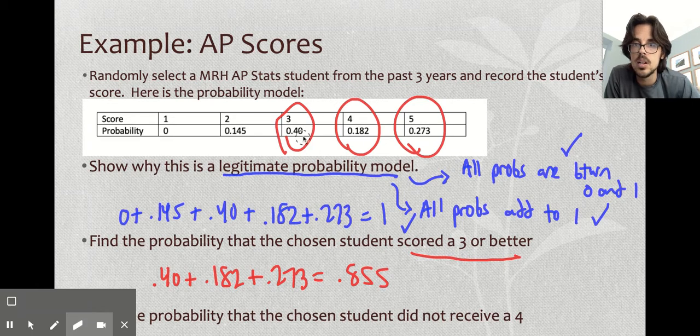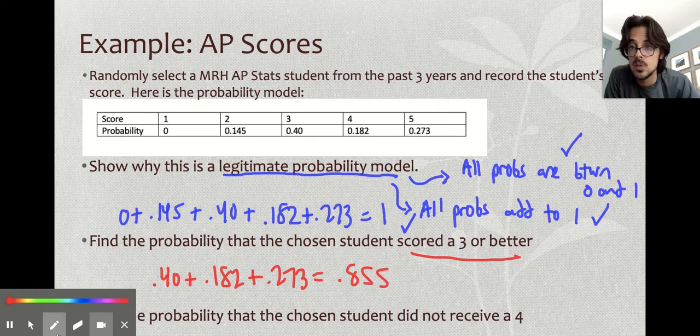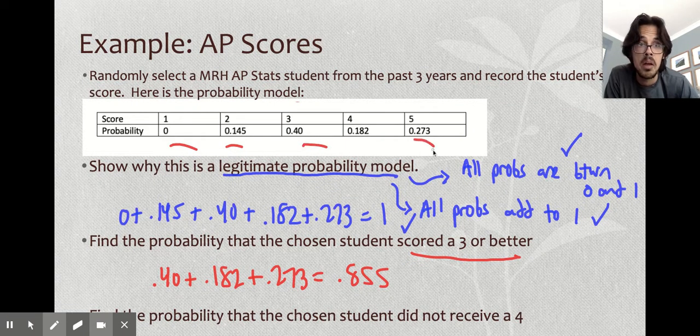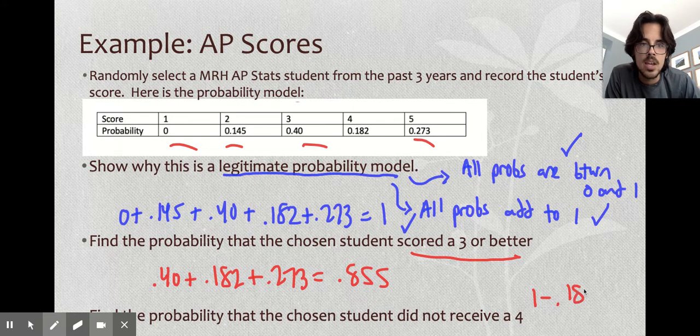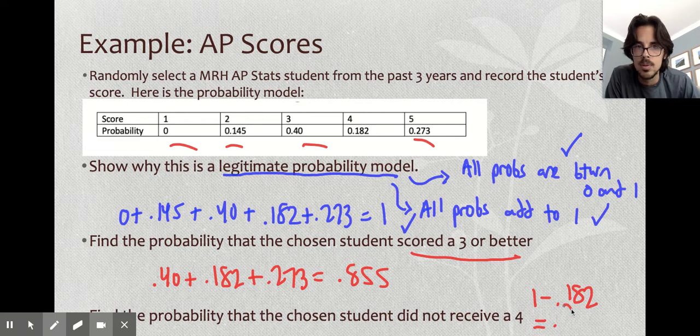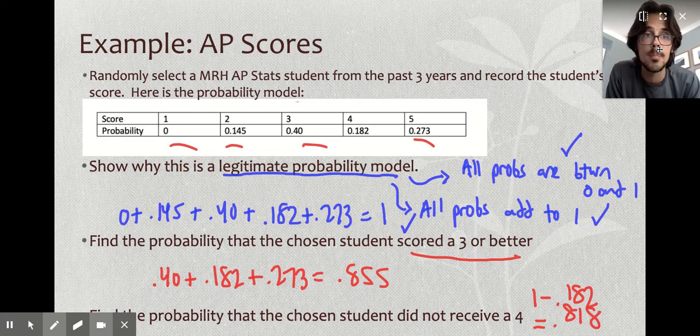And then for this next one, it says the probability that if you pick somebody, they did not get a 4. So it could be like anything else, but not a 4. There are two ways of doing this. One is just add up all the other scores, and that would be totally cool. That's everything that's not a 4. You can also use that complement rule, which sometimes is easier, and just do 1 minus the one that you don't want. If you do that, you're going to get a probability of 0.818. So that is how you calculate basic probabilities using a probability model.